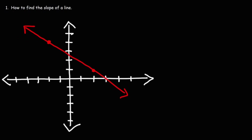Let's try another example. Go ahead and pause the video and find the slope of this line. The first thing we need to do is choose two points — we have two points already highlighted for us. Using these two points, let's find the slope of the line using the rise over run method.